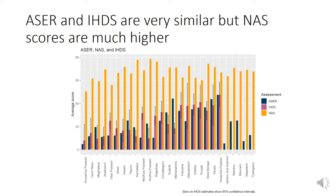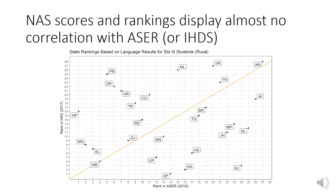This graph shows ACER, IHDS, and NAS state averages. For ACER and IHDS, it's the percentage of kids in grade 3 who have achieved the highest level on the reading exam — i.e., able to understand a standard 2 level text. For NAS, it's grade 3 students reading at a grade 3 level. What you see is that ACER and IHDS averages are pretty similar to each other across most states, with a few exceptions. Whereas NAS state averages are much, much higher. Furthermore, the state rankings are not at all similar across ACER and NAS — the rank in ACER on the x-axis versus rank in NAS on the y-axis shows almost no correlation between the two.